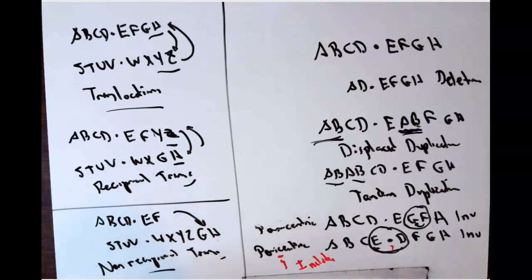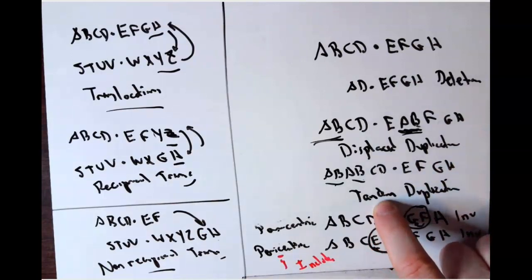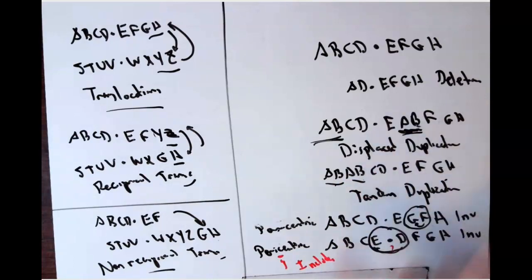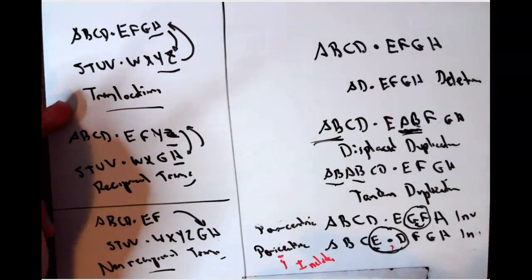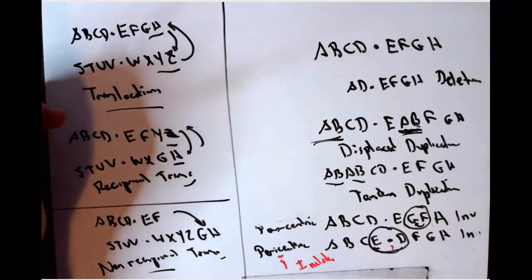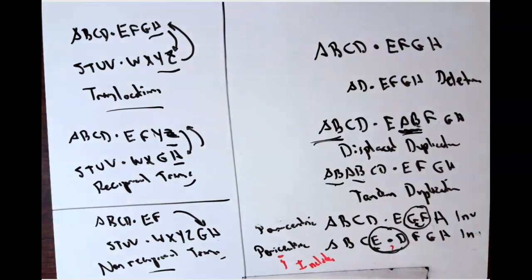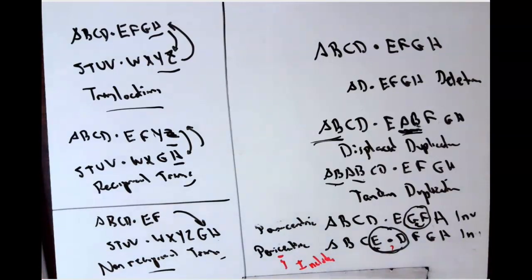Don't memorize these terms — understand them. You know what it means to delete, to duplicate, what tandem marchers are, what displaced means. Translocation: trans means across, location means location — the location is moving across, and you either reciprocate or you don't. These terms truly describe what's going on. Let me know if you have any questions on any of this material; hopefully this video clarifies your understanding of everything in this week's material.